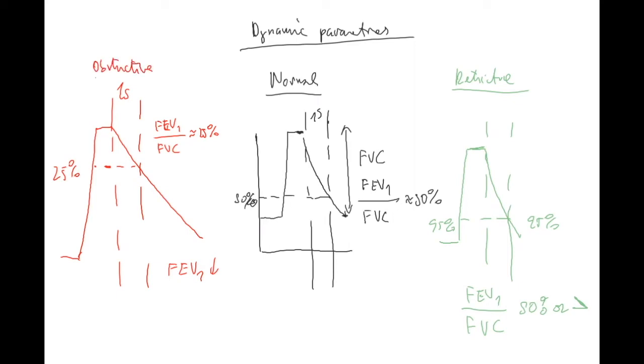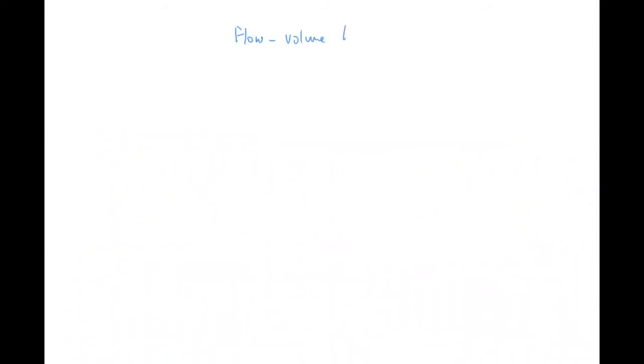This was the simple FEV1 curve. Now, if you put the patient in a machine and measure all the volumes, you also get flow-volume loops. These measure the speed - how the flow is behaving - and these are special curves that tell you a lot.